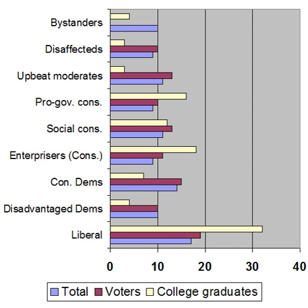Conservatives were also more likely to be married than liberals — 77% of enterprisers were married compared to 44% of liberals. Disadvantaged and conservative Democrats had the highest union membership rates, 23% and 18% respectively, compared to an overall 14%, as well as the highest percentage of minorities. In terms of gun ownership, the majority of enterprisers and social conservatives had a gun at home, compared to just 23% of liberals. Liberals were the most educated group with 49% being college graduates compared to an average of 26.5% among all the conservative groups. Disadvantaged Democrats were the least educated with only 13% having a college degree.